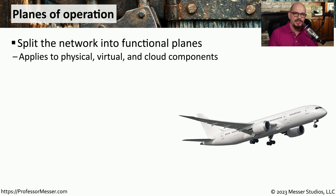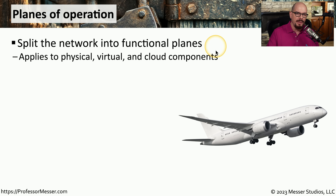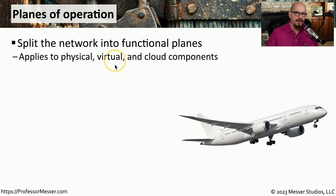One of the ways we can start examining and implementing zero trust is by taking our security devices and breaking them into smaller individual components. We commonly refer to this as separate functional planes of operation. Whether it is a physical device, a virtual device, or a security process running in the cloud, we can apply these different control planes to every single one of these security controls.